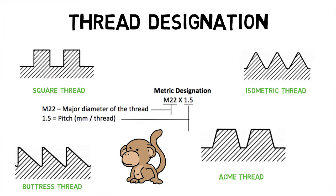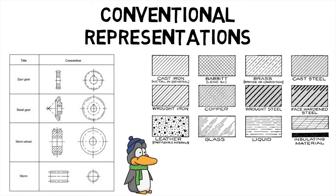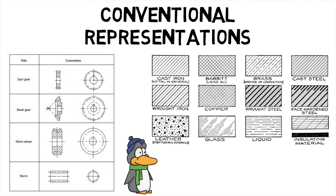Hence, we first saw what thread designation is and then went on to see how machine components and materials are conventionally represented.